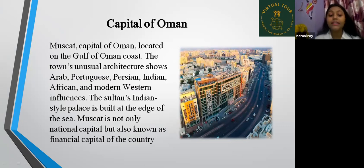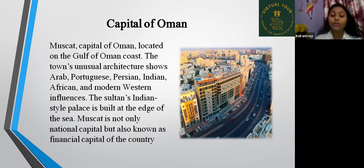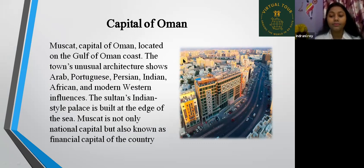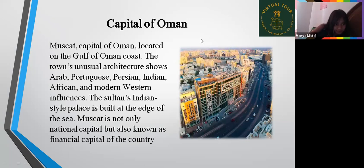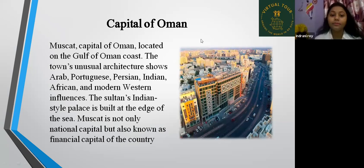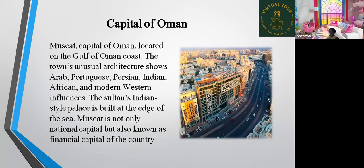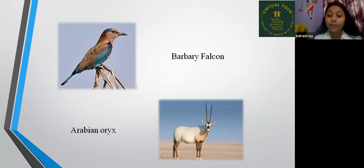The Sultan's Indian-style palace is built at the edge of the sea. Muscat is not only the national capital but also known as the financial capital of the country. The capital of Oman is Muscat. Now, the national bird is Barbary Falcon and the national animal is Arabian Oryx.